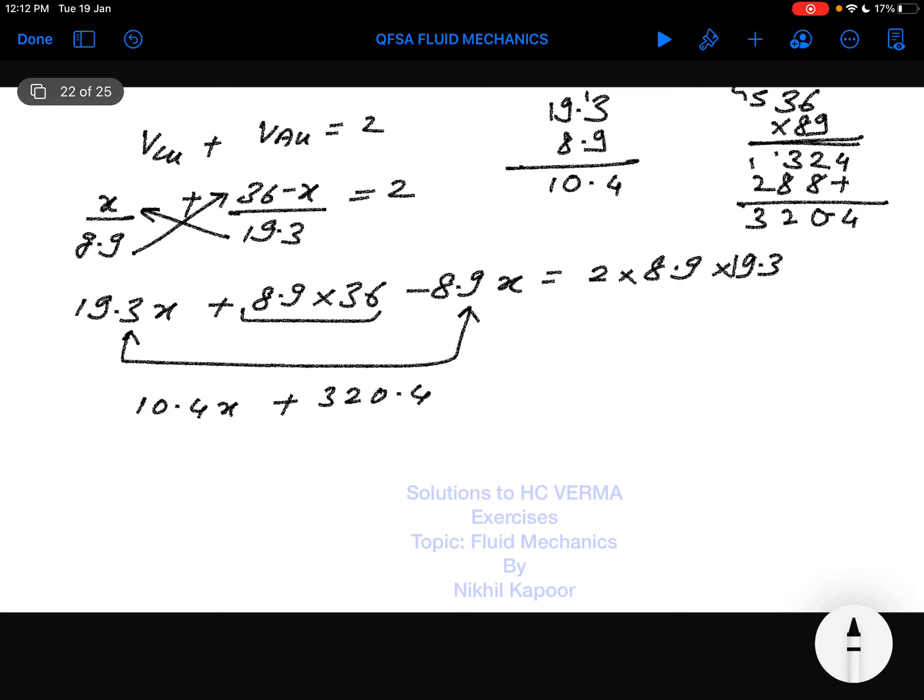Now calculating 2 times 8.9 times 19.3. First, 19.3 times 8.9 equals 171.77. Then multiplying by 2 gives 343.54.